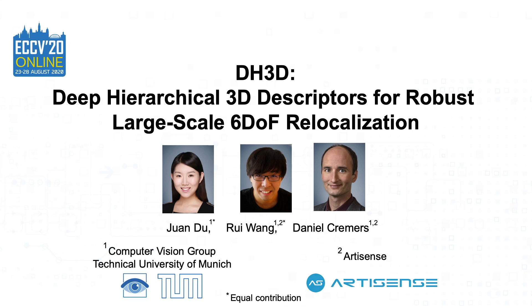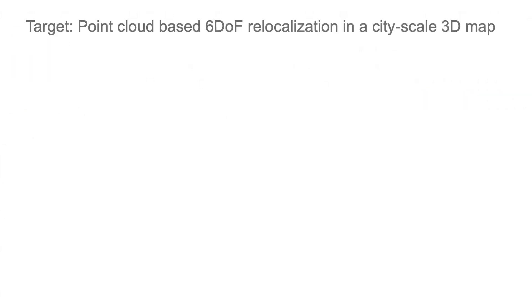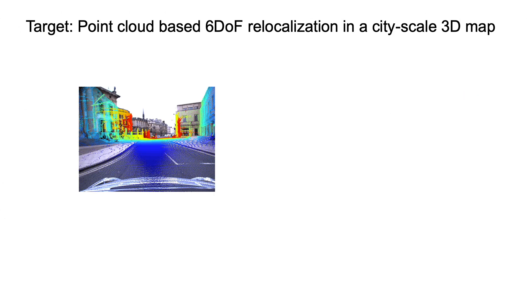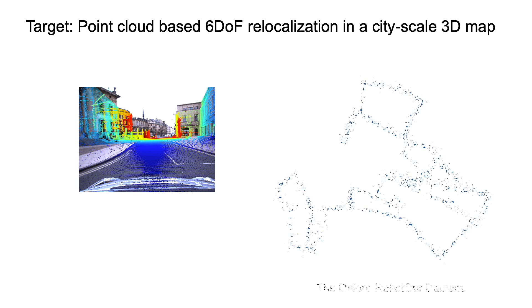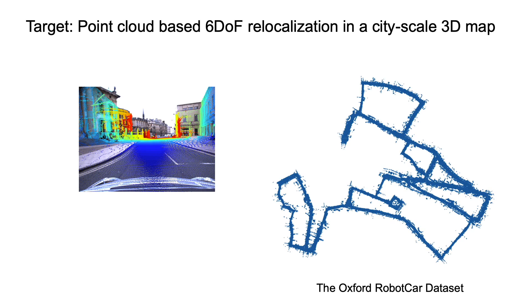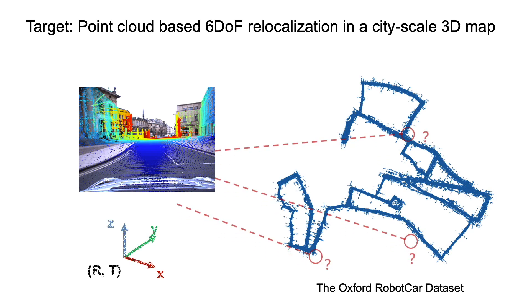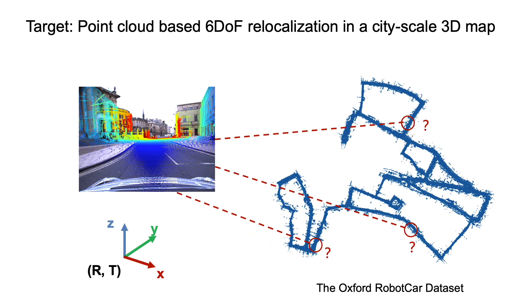In this work, we explore learning deep hierarchical 3D descriptors for robust large-scale 6-DOF relocalization. The target is to relocalize a point cloud of a query in a city-scale 3D map, outputting an accurate 6-DOF pose.